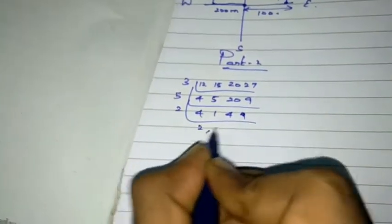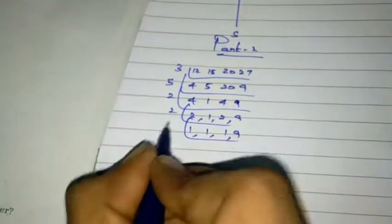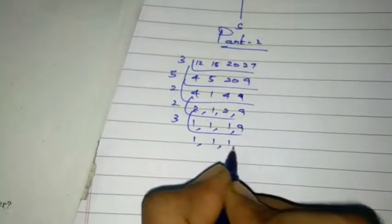2, 1, 2, 9. 3 table. 1, 1, 1, 9. So, 3 table. 1, 1, 1, 3. Okay, multiply it.